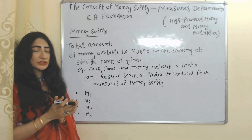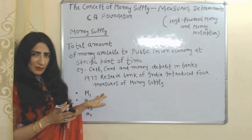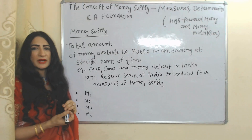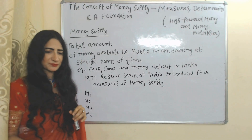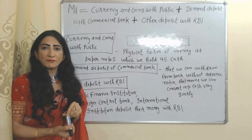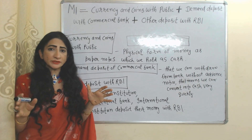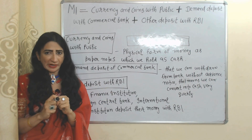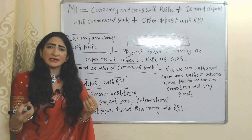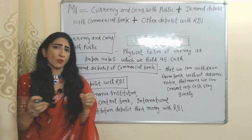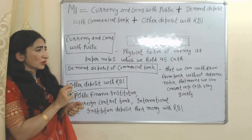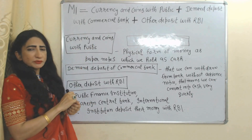The four measures are M1, M2, M3, and M4. We will discuss each one by one. The first measure is M1. M1 is the most liquid portion of money supply, meaning M1 consists of cash or any asset which we can convert into cash very quickly. That's why M1 equals currency and coins with the public.